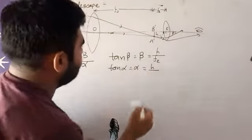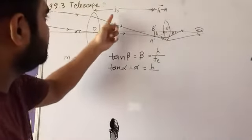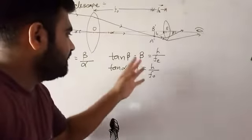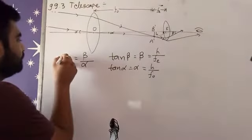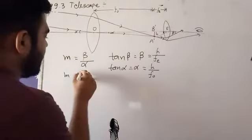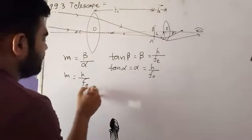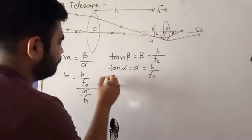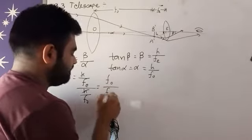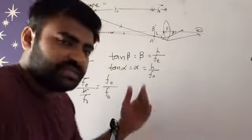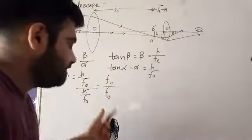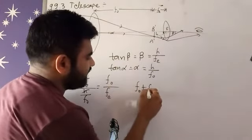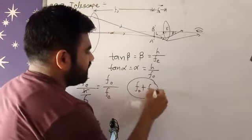Similarly, tan alpha is equal to, again it is very small, so I can write alpha instead of tan alpha, which equals opposite h upon adjacent, that is fo. So beta and alpha, by putting this equation here, we get m is equal to beta, h upon fe, upon alpha, h upon fo. This term gets cancelled out, so we are now remaining with fo upon fe.